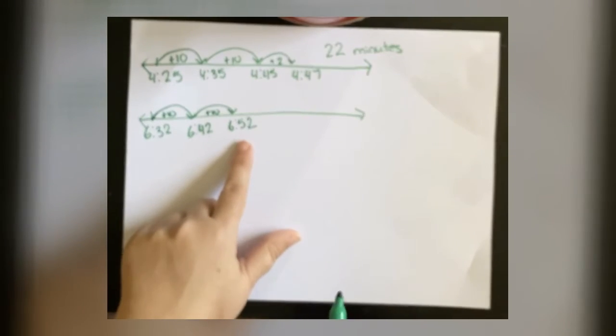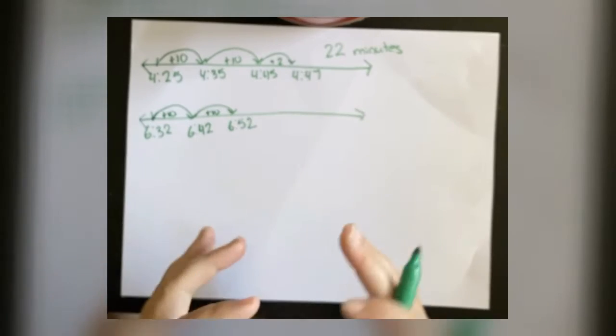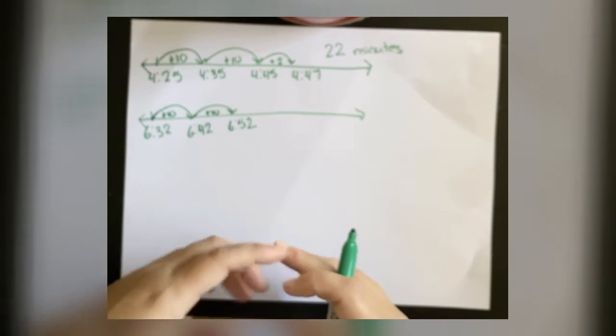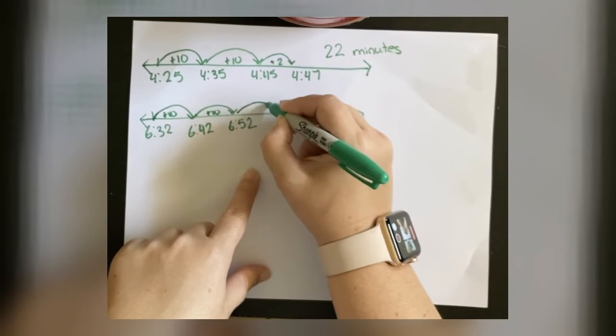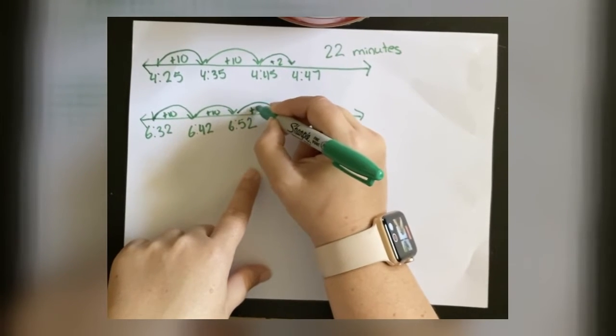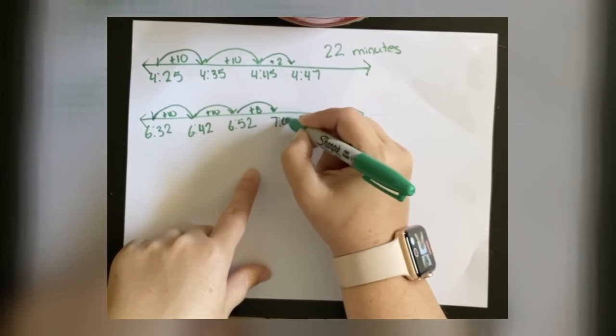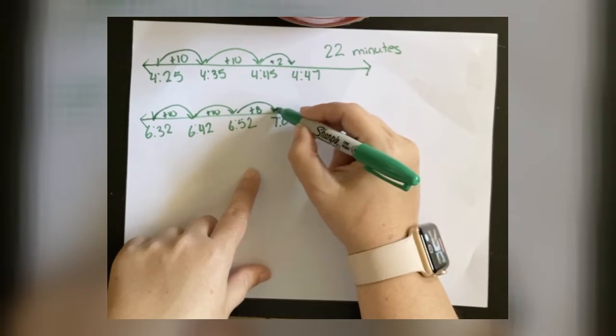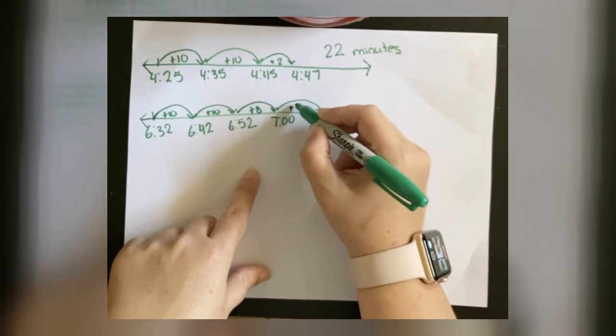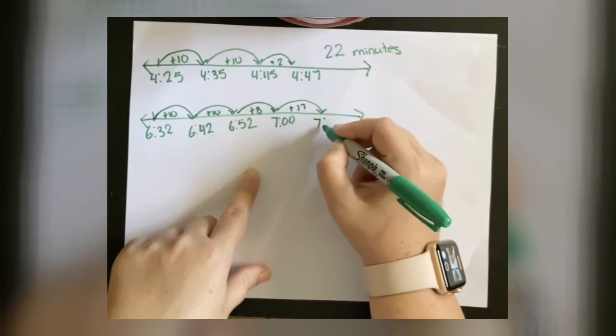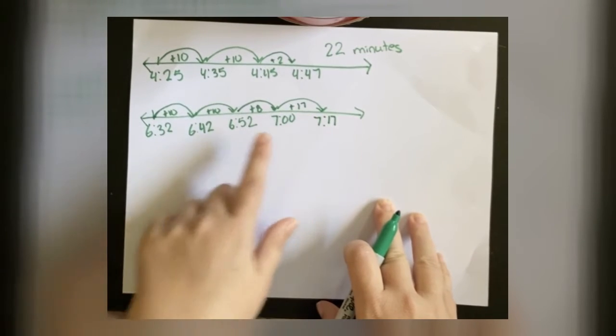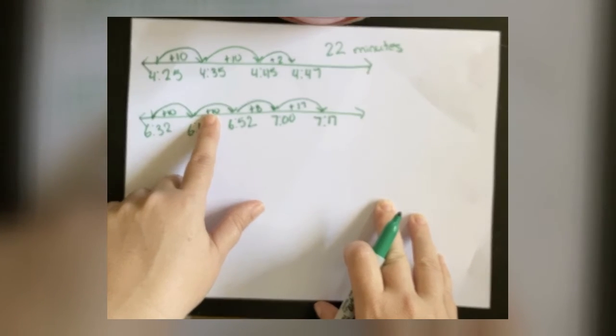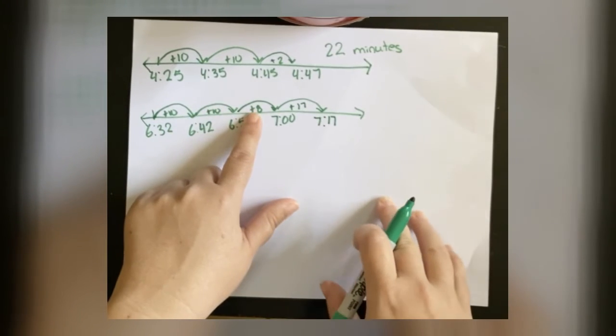Now I'm not going to add 10 minutes here because remember when we work with time we work in increments of 60. So to get to the next hour, I'm going to add only 8 minutes this time to bring it to 7 o'clock, and then I know I read until 7:17, so I can go ahead and add those final 17 minutes. Now I need to add these all together, so 10 plus 10 is 20, 20 plus 8 is 28.